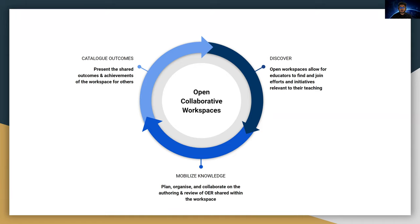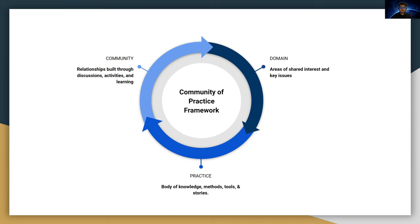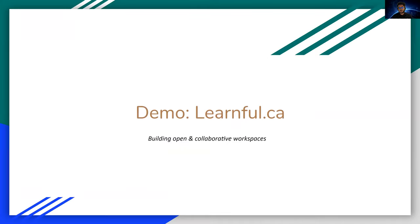The final component is the cataloging of outcomes — essentially, what did the workspace achieve, what are some of the outcomes shared, and being able to share that with the rest of the community for educators who find it in the future. If this chart looks familiar, it's because you might recognize the community of practice framework, which is what we use to design many of the features. What you'll be seeing in the Learnful demo is the five hours of the community of practice framework implemented in a web application.